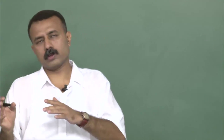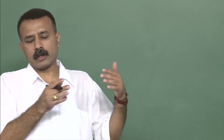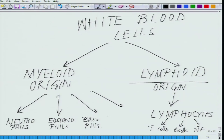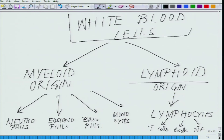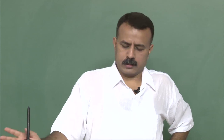Natural killer cells are part of the lymphoid origin. On the myeloid side, we have neutrophils, eosinophils, basophils, and monocytes. Typically, if you take one microliter of blood, you get around 6,000 to 7,000 white blood cells, distributed among these five different cell types: neutrophils, eosinophils, basophils, lymphocytes, and so on.